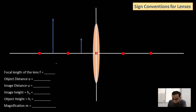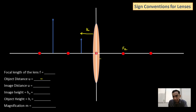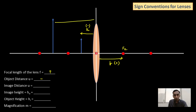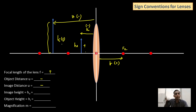Now let us talk about virtual image formation. You can apply the same coordinate approach for the concave lens as well — no change. Since the object is on the left-hand side, u is definitely negative. f2 is always on the right-hand side, so focal length is always positive. Virtual images are found on the left-hand side, so image distance v is also negative. Height of the object ho is measured upward, so positive. Height of the image hi is also measured upward along the positive y-axis, so positive. Since both hi and ho are positive, magnification is also positive.